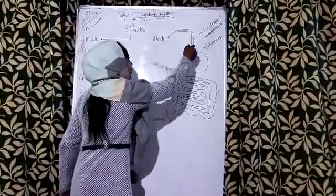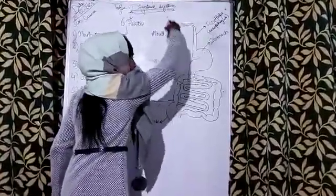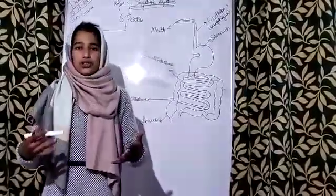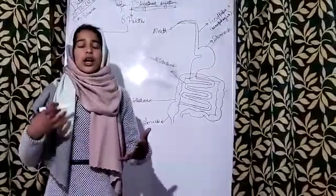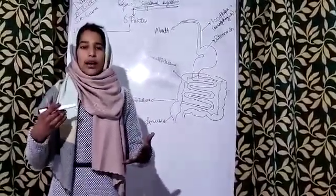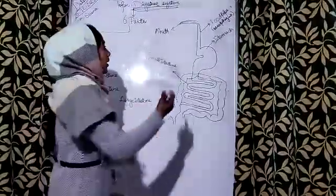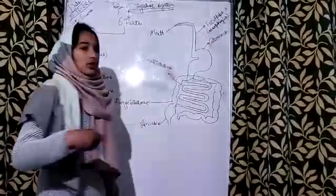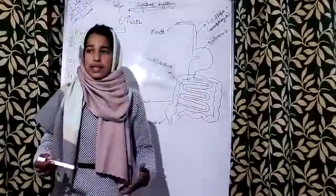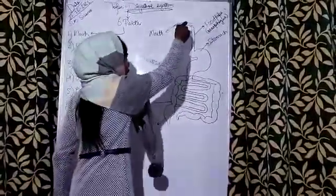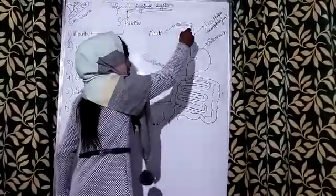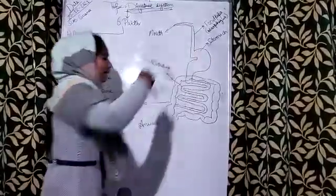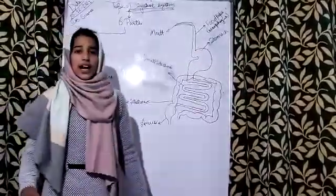When digestion begins in the mouth, the food then reaches a long rope-like tube structure. It is 25 centimeters in length and it is called the esophagus, also known as the food pipe. From the esophagus, the food reaches to the stomach.